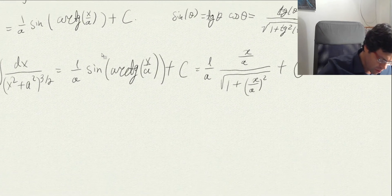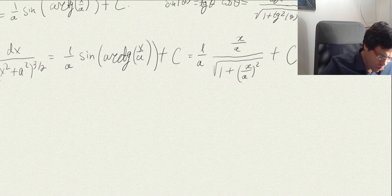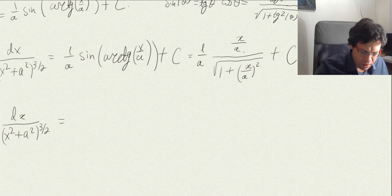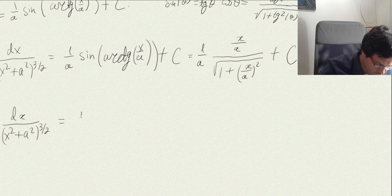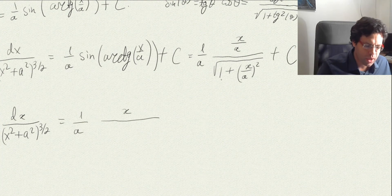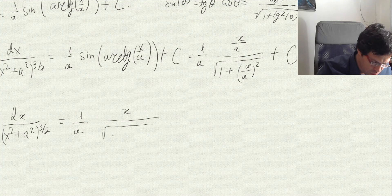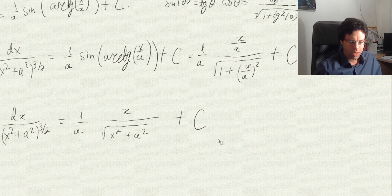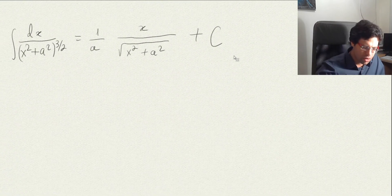Let's rewrite the final answer cleanly. The integral of dx over x squared plus a squared to the power of three halves equals 1 over a times x over a divided by the square root of 1 plus x squared over a squared, plus a constant. Multiplying numerator and denominator by a, we get x divided by the square root of x squared plus a squared, all over a squared, plus a constant.